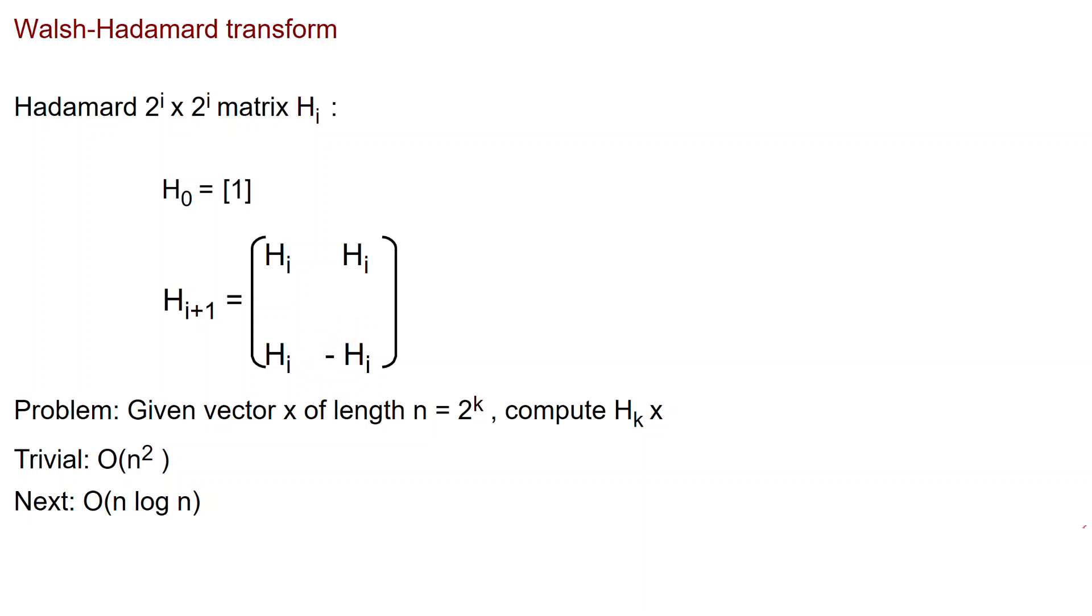So let's do a couple of examples. The matrix H_1 would look like this, where I have taken four copies of the matrix H_0, which is just the number one, and the copy in the bottom right corner has the minus sign. And the matrix H_2 looks like this. H_2 is a four by four matrix consisting of four submatrices. This is just the matrix H_1 which is here, again the matrix H_1, again the matrix H_1, and again the matrix H_1 here.